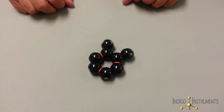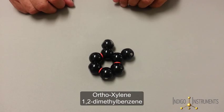Adding a second methyl group we have ortho xylene or 1,2-dimethylbenzene.